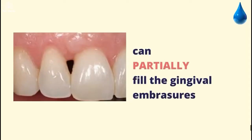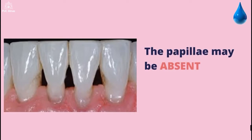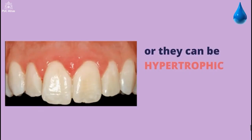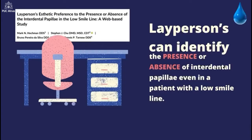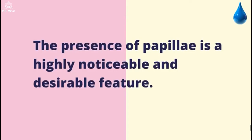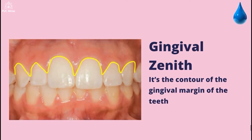The papilla can fulfill the gingival embrasures, can partially fill the gingival embrasures, the papilla may be absent, or they can be hypertrophic. A layperson can identify the presence or absence of interdental papilla even in a patient with a low smile line. The presence of papilla is a highly noticeable and desirable feature.